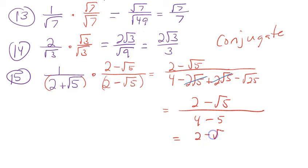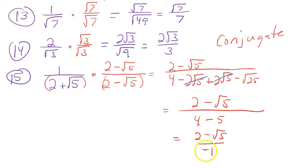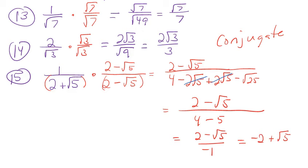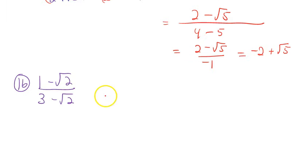Since we don't normally leave a 1 on the bottom of fractions, the negative 1 gets distributed into the top, giving a final answer of negative 2 plus √5.